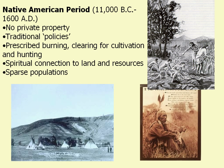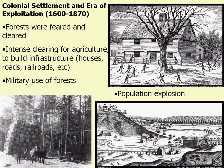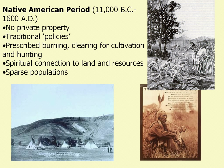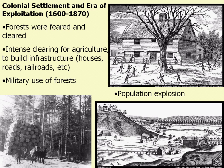However, soon after the arrival of European colonists, the forests of the U.S. began a rapid transformation as forests were cut to build the infrastructure for the New World. Forests and forest lands were viewed as inexhaustible. Wetlands were drained, forests were cleared, towns emerged, and in the meantime, the population exploded.